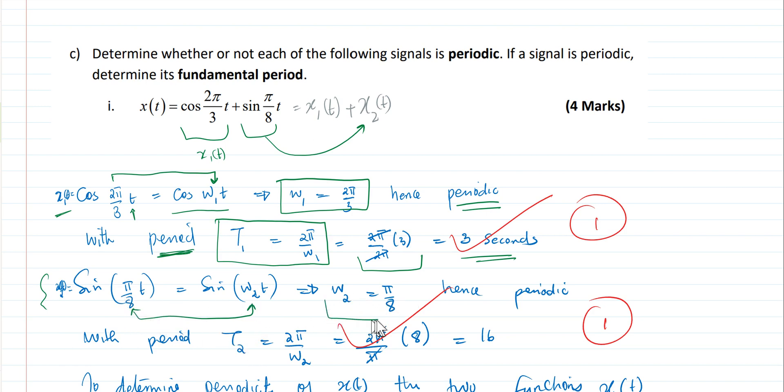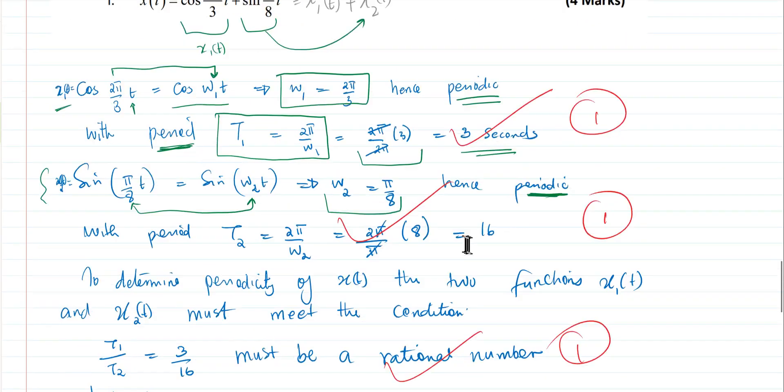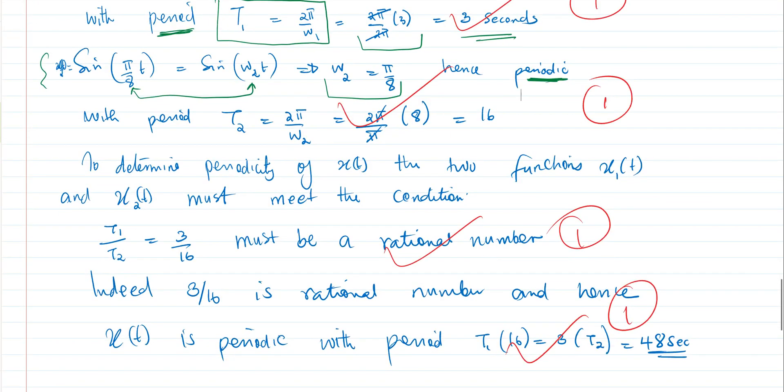And therefore, we have π/8 equals ω2. And again, we make a conclusion that that function is periodic. Having said that, we can determine the period by saying that the period is 2π times the reciprocal of ω. And therefore, what we find is that our second period is 16.